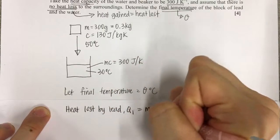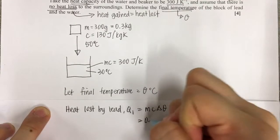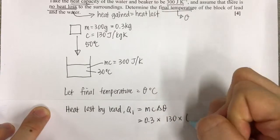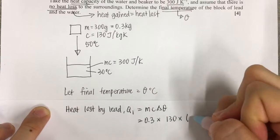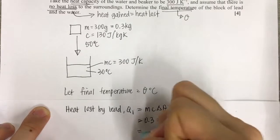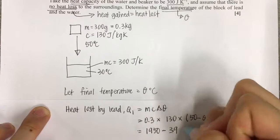Q1 equals mcΔθ. M is 0.3, C is 130, delta theta is 50 minus theta. We get 1950 minus 39θ J.